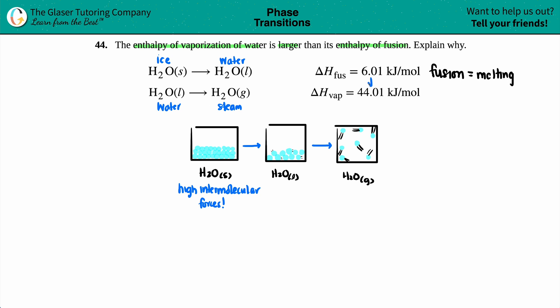And look at the difference in value. To go from ice to water, to just melt ice, it requires 6.01 kilojoules of energy per one mole of ice, or H2O solid. But it takes 44.01 kilojoules per one mole of water to turn it into steam.